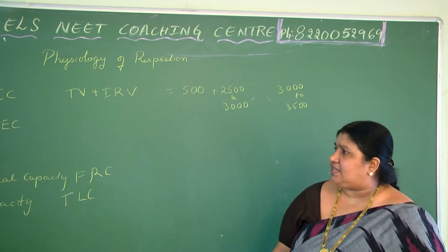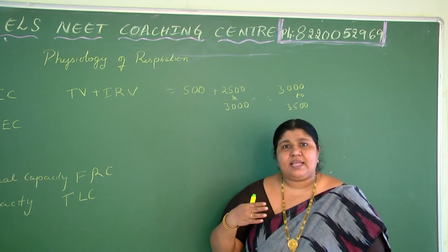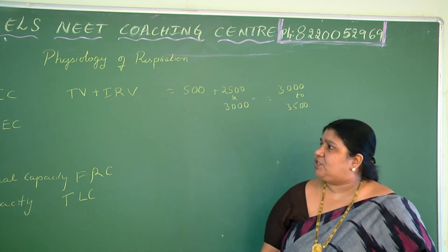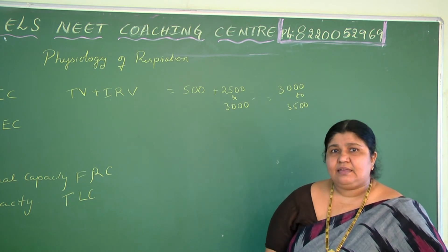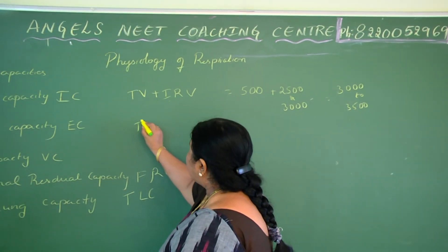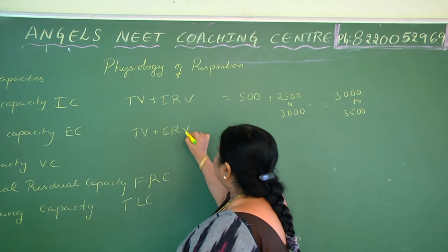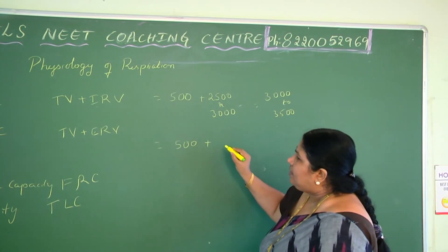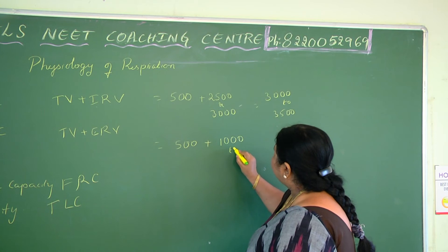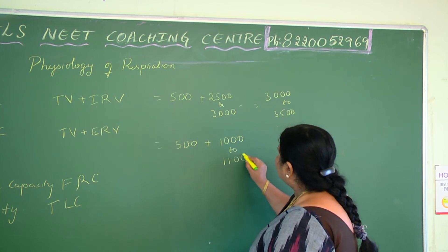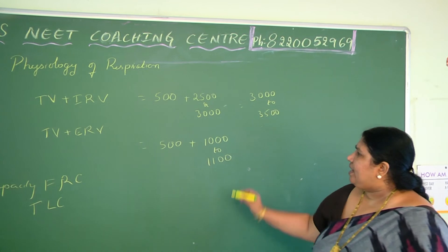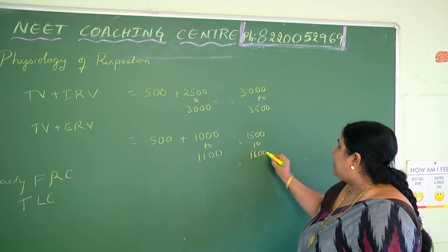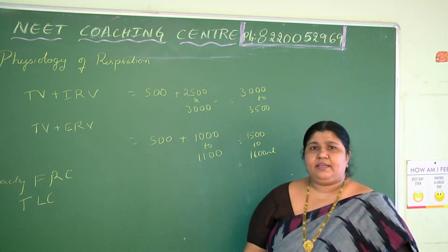What is expiratory capacity? The total amount of air a person can exhale after normal inhalation is called expiratory capacity — EC. We get EC by summing TV plus ERV. TV is 500, and ERV is 1,000 to 1,100 ml, so we get approximately 1,500 to 1,600 ml as the expiratory capacity.